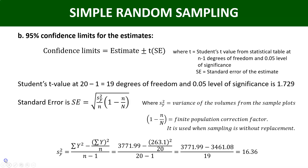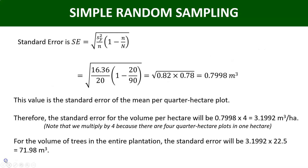Substituting that variance into the standard error formula gives SE = 0.7998 cubic meters. Here, small n is the number of sample plots selected (20), and capital N is the total number of sampling units. The entire area is 22.5 hectares and each plot is 50 m × 50 m, so dividing gives N = 90. That is how capital N equals 90.